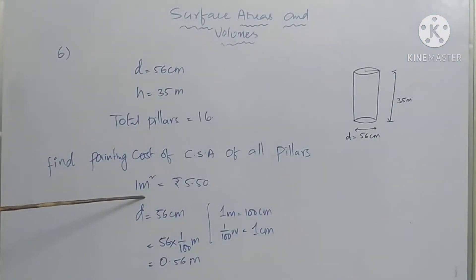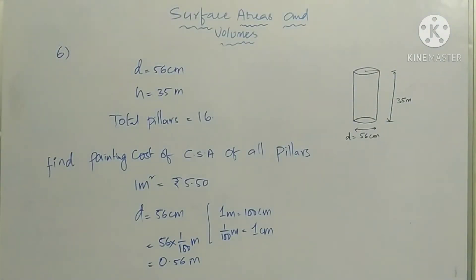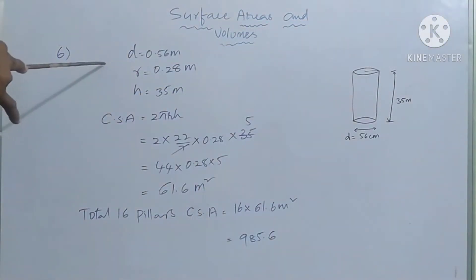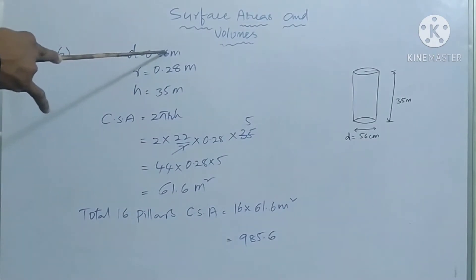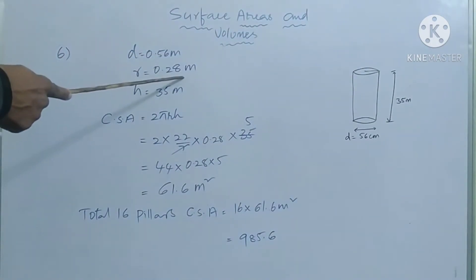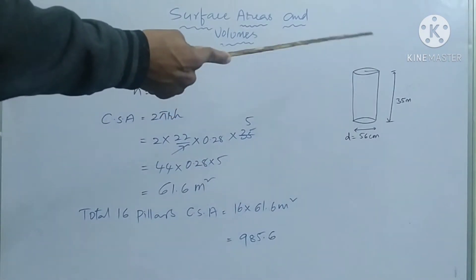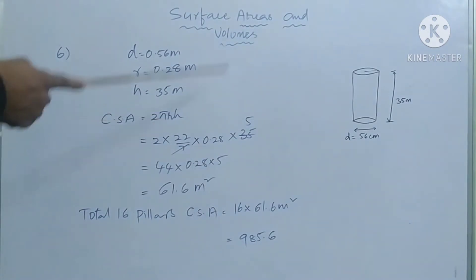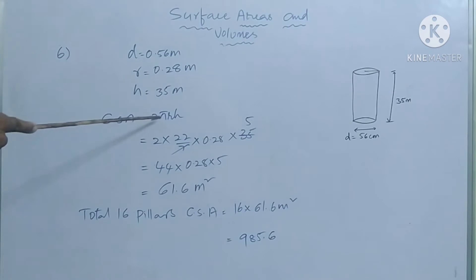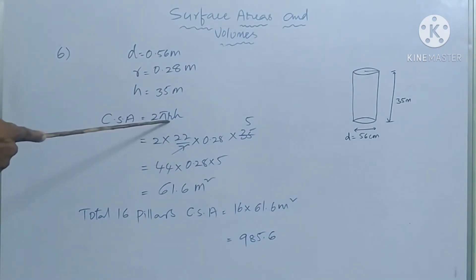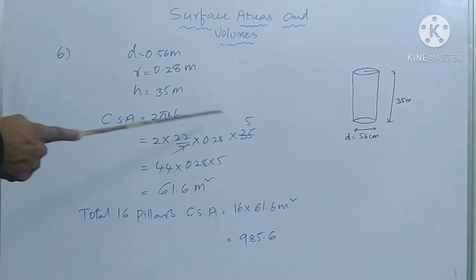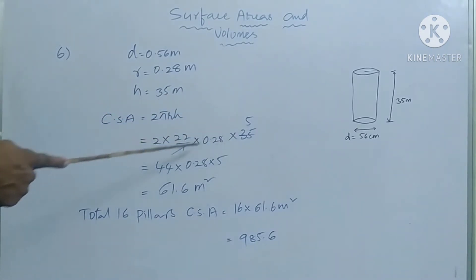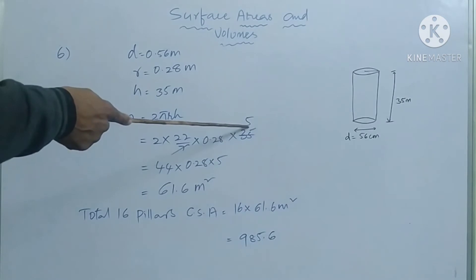Now diameter and height are both in meters, matching the painting cost units. The diameter of the cylinder is 0.56 meters, so radius is 0.28 meters. Height is 35 meters. The curved surface area of a cylinder is formula 2πrh. Substituting: 2 into 22 by 7, into r = 0.28 meters, into h = 35 meters. Simplifying: 35 divided by 7 gives 5.